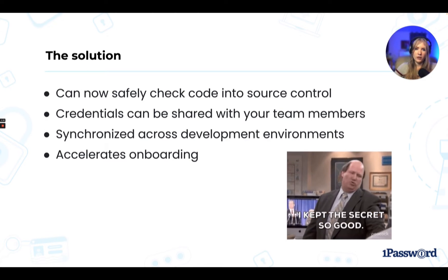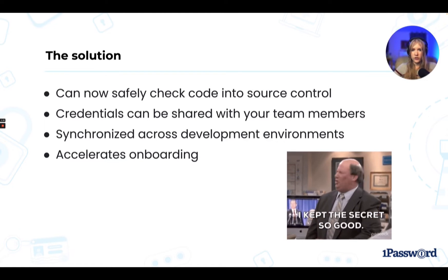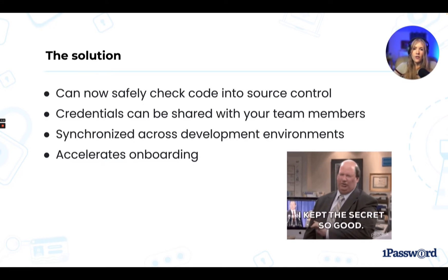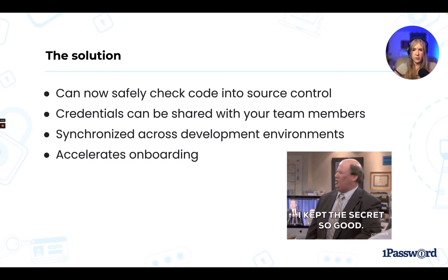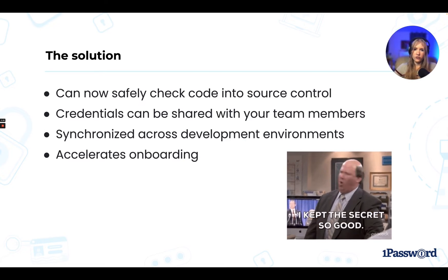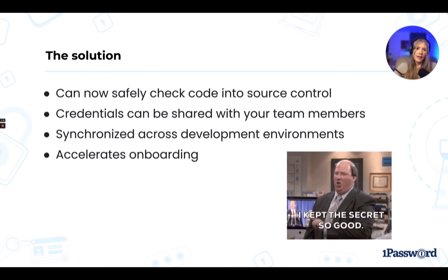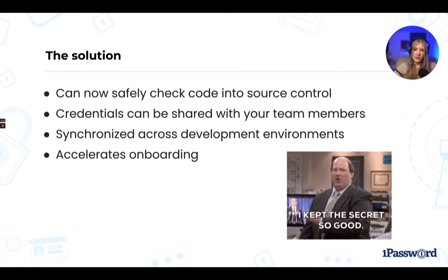When your teammate makes a change to the code base that requires a configuration update, they commit the required config changes in the environment file together with the code changes. These references can then be reviewed to make sure the correct secrets are being requested. Once approved and merged, all a developer needs to do is pull down these changes and they're good to go. All the configuration is synchronized through source control and you never have a broken environment due to incorrect credentials again. This ensures that the configuration is reproducible, complete, and limits those 'it worked on my machine' comments.